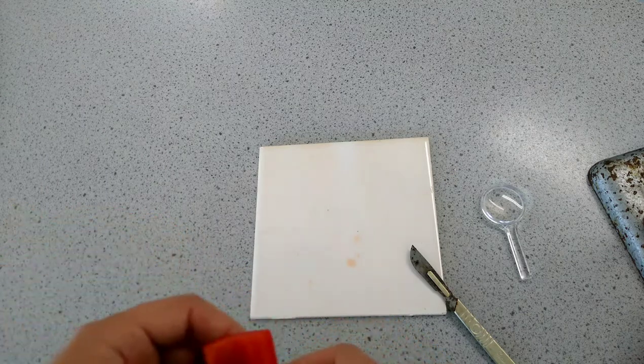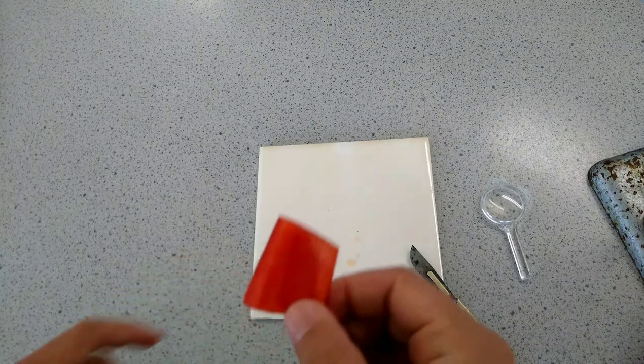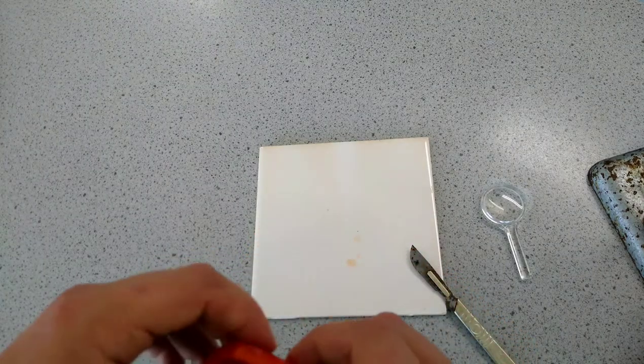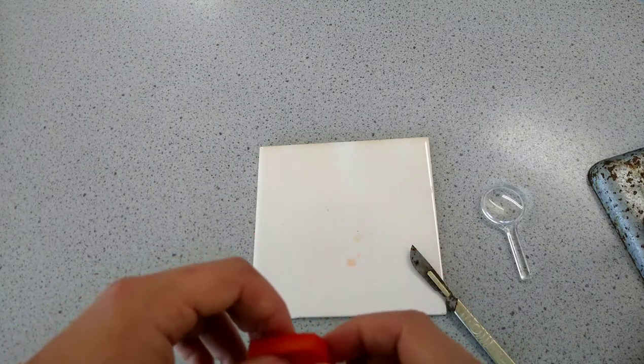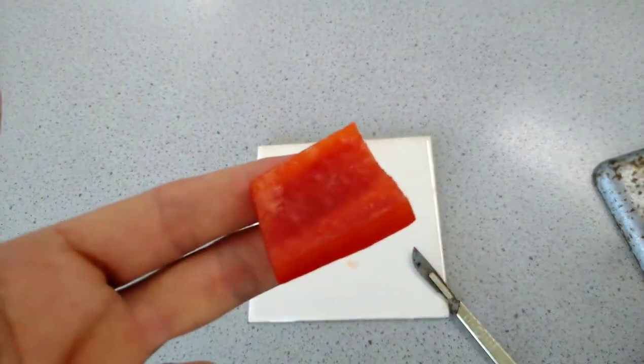So following the instructions, I've used a cutting tile, I've used a scalpel, I've cut out a piece of bell pepper approximately two centimeters squared. I'm now going to use a hand lens to examine the inner surface of the pepper.